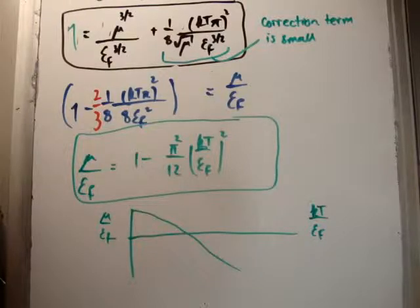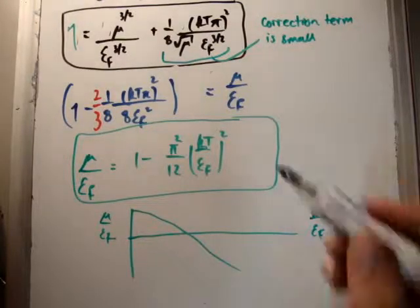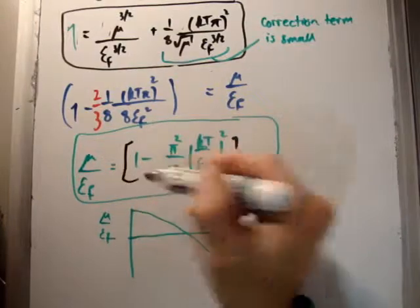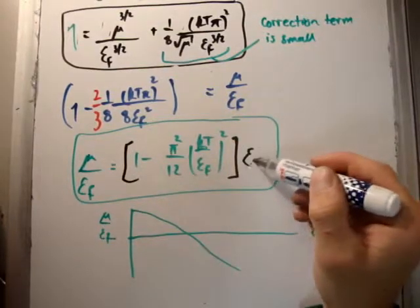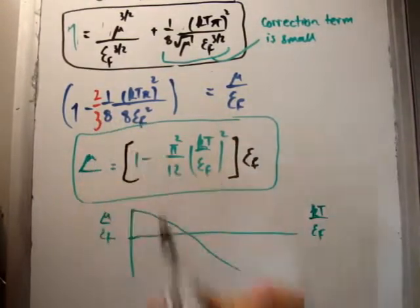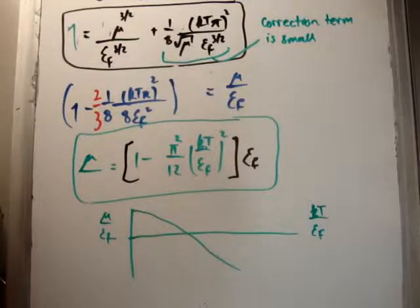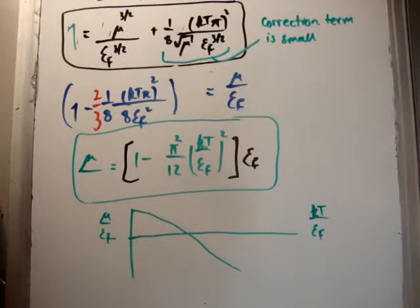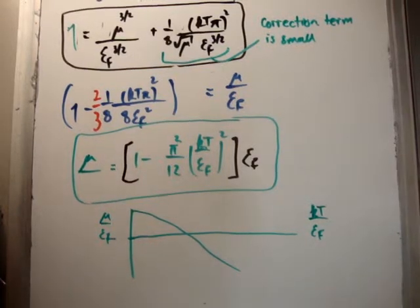So that's the Sommerfeld expansion. We've calculated the chemical potential in terms of the Fermi energy and obtained the functional form of the chemical potential for a Fermi gas: mu equals E_Fermi times (1 minus pi squared over 12 times (kT/E_Fermi) squared). Thanks for watching — please pass it on to your friends, subscribe to my channel, and visit universityphysicstutorials.com.